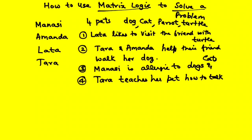Assume we have a typical problem and we want to solve it. There are four friends: Manasi, Amanda, Latha, and Tara. These four girls are friends and they have four different pets, but we don't know who has what. The pets are a dog, a cat, a parrot, and a turtle. We have four pieces of information and we want to find who owns what using matrix logic.